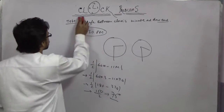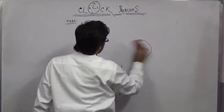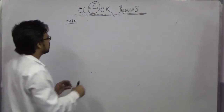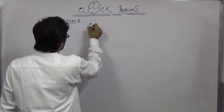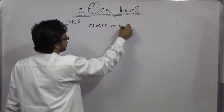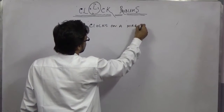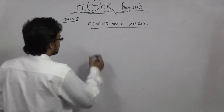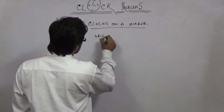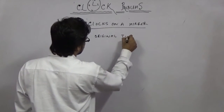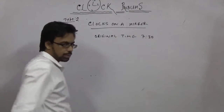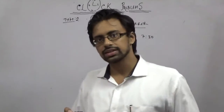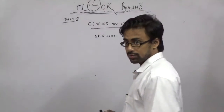Type 2: Clocks on a mirror. What happens when the clock is on a mirror? If I tell you the time is 7:30, how much time can you see in the mirror? It is like taking a selfie — in a selfie everything is reversed, and here also it will be reversed.